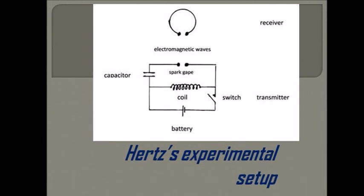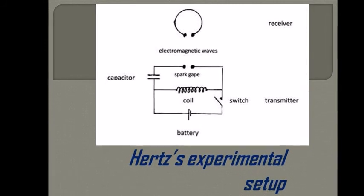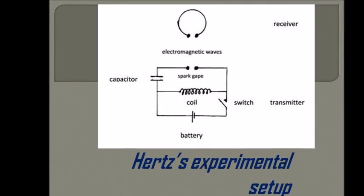Hertz was experimenting with a pair of Riess spirals in the autumn of 1886 when he noticed that discharging a Leyden jar into one of these coils would produce a spark in the other coil.